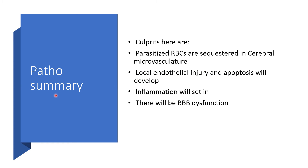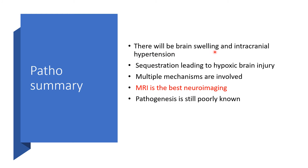To summarize the pathophysiology: parasitized red blood cells are sequestered in the cerebral microvasculature. Local endothelial injury and apoptosis develop. Inflammation sets in and there will be blood-brain barrier dysfunction, brain swelling, and intracranial hypertension. Sequestration leading to hypoxic brain injury will occur. Multiple mechanisms are involved. MRI is the best neuroimaging. Pathogenesis is still poorly understood — what has been presented here is hypothesis, not yet categorically established in the literature.